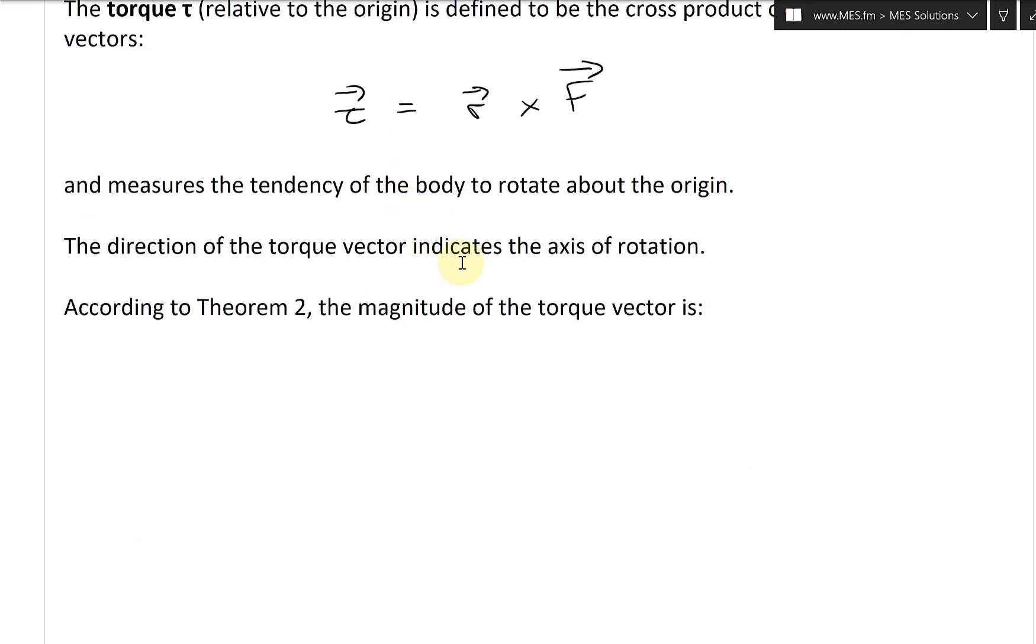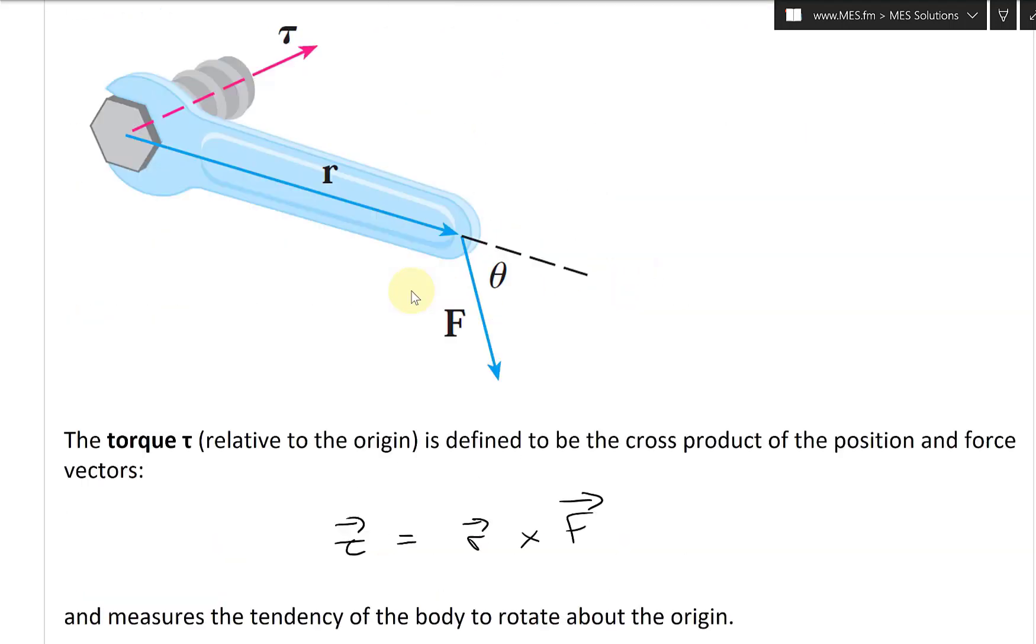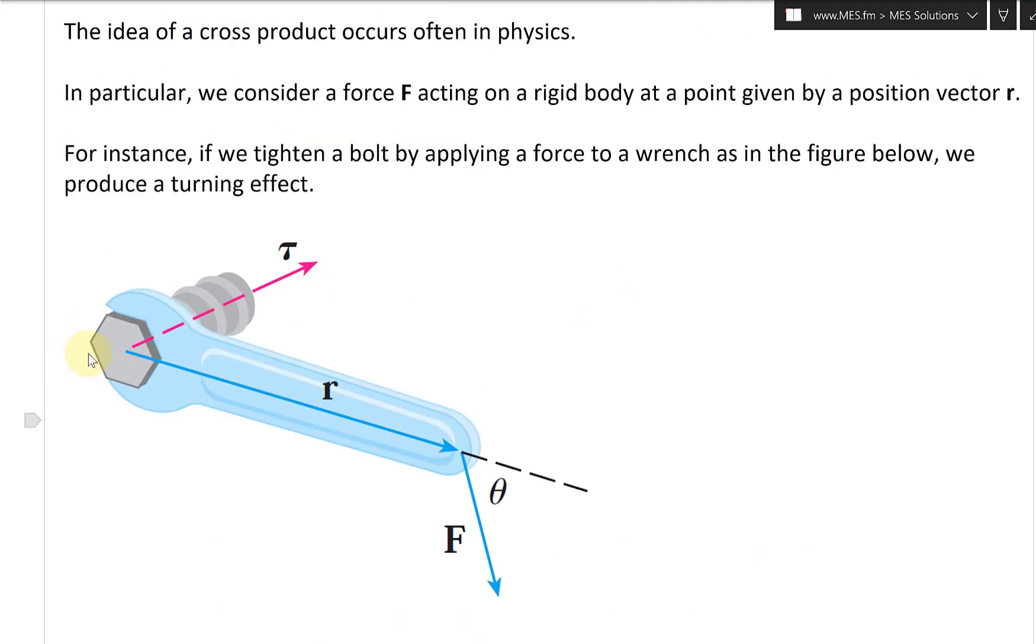The direction of the torque vector indicates the axis of rotation. So if it's pointing here, and then if you're doing right hand rule, this would be curling, see how this would be curling downwards. So right hand rule is this way, your fingers are curling inwards this way, and your thumb is sticking out, again just using the right hand rule.